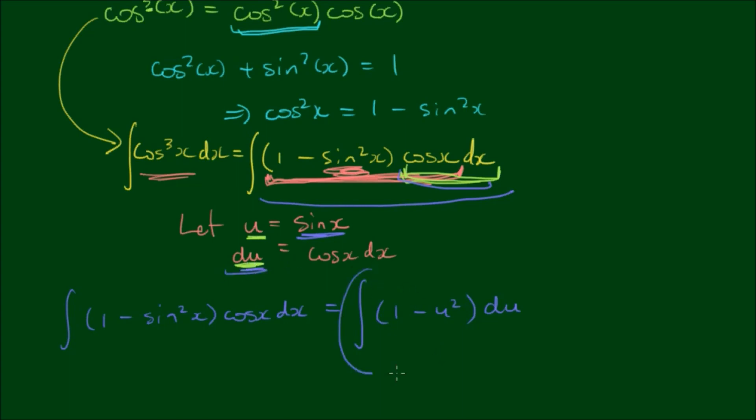Can we integrate this right-hand side? Yes, because now this is simply a polynomial where we can use the power rule. The integral of the first term, 1, is simply u. The integral of the second term, we increase the power by 1 and divide by the new power, so we get u cubed on 3.